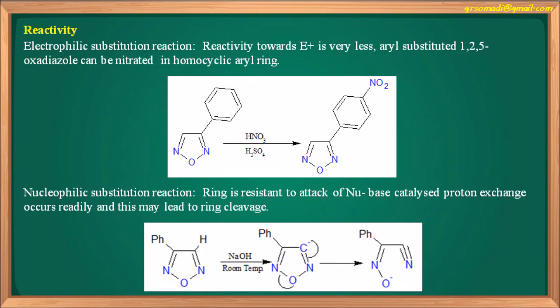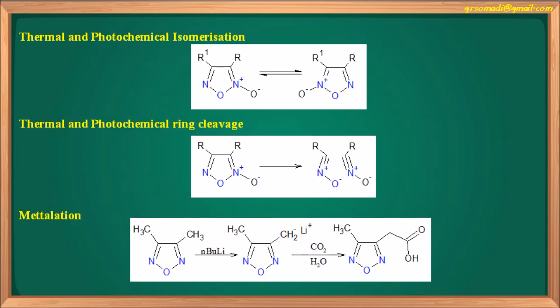In reactivity, electrophilic and nucleophilic substitution reactions apply. Reactivity towards electrophiles is very low. Aryl-substituted 1,2,5-oxadiazoles can be nitrated in the homocyclic aryl rings attached at the third position. For nucleophilic substitution, the ring is resistant to nucleophile attack; however, base-catalyzed proton exchange occurs readily and may lead to ring cleavage of 1,2,5-oxadiazole. Other reactions include thermal or photochemical isomerization, thermal and photochemical ring cleavage, and metallation reactions using n-butyllithium.